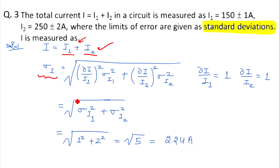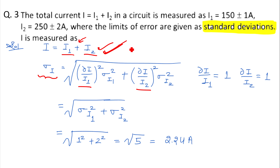We need to differentiate this equation, first with respect to i1 and then with respect to i2, to find the partial derivative values.